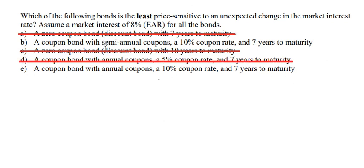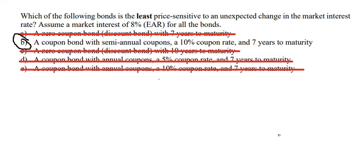And the last criterion: we have semi-annual and annual. So we need to choose B because it is semi-annual. The final answer should be B. This is the end — thank you for watching.